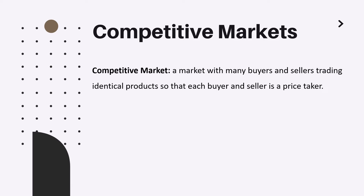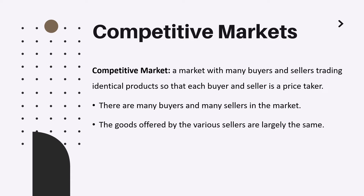Competitive markets need to satisfy three main characteristics. First, there are many buyers and many sellers in the market. Second, the goods offered by the various sellers are largely the same. Third, firms can freely enter or exit the market.